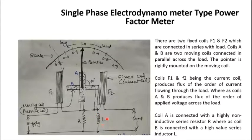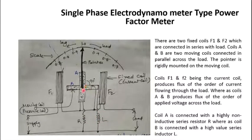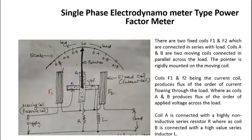The fixed coil is actuated by the current flowing through the load, while the moving coil is actuated by the current corresponding to the voltage appearing across the supply or load. One moving coil has a highly non-inductive resistance connected in series with it, while the other has a highly non-inductive inductance in series. At 50 Hz frequency, we ensure R equals the inductive reactance XL, so the current flowing through A and B is always the same. The phase difference between voltage and current depends on the type of load, which is the power factor we are measuring.